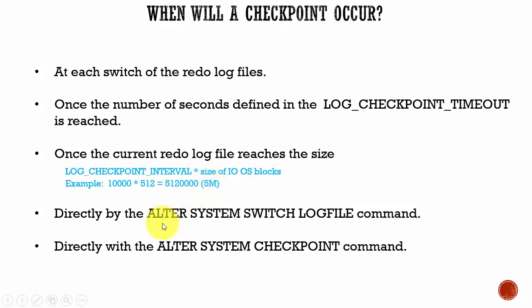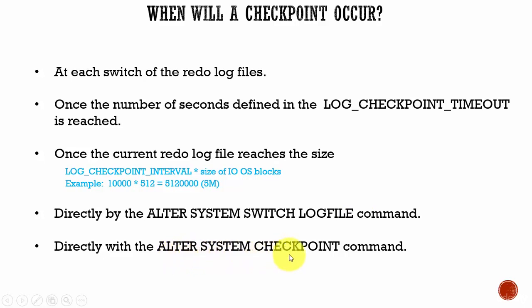The fourth scenario is whenever the Oracle DBA manually switches the log using the ALTER SYSTEM SWITCH LOGFILE command, a checkpoint will occur. The fifth scenario is whenever the DBA issues the command ALTER SYSTEM CHECKPOINT, the checkpoint will occur. In any of these five scenarios a checkpoint can occur.